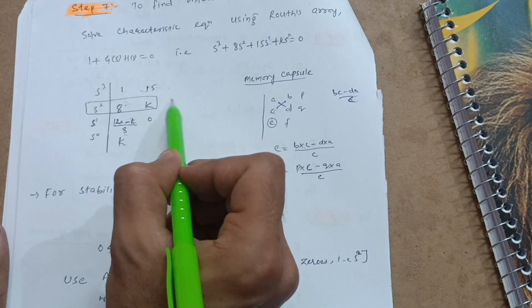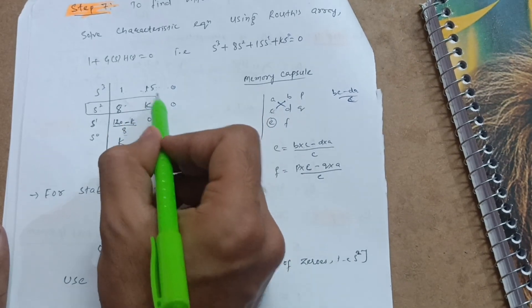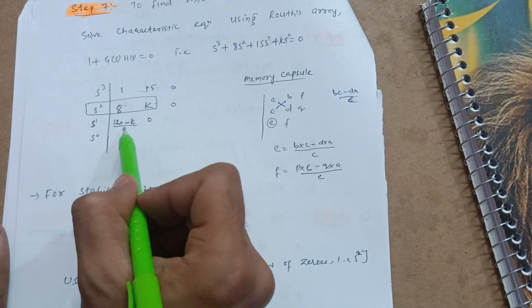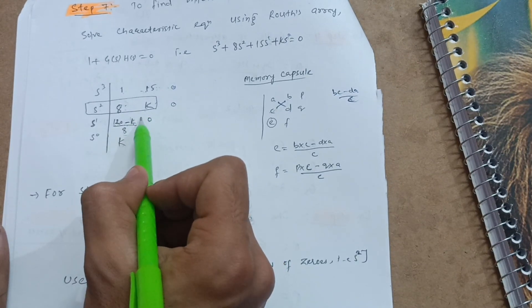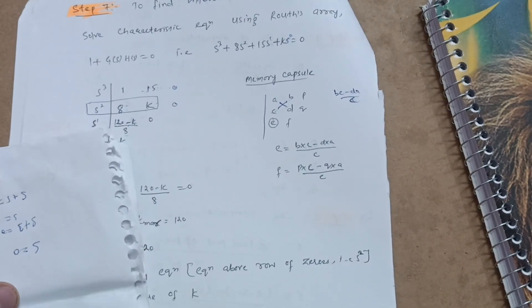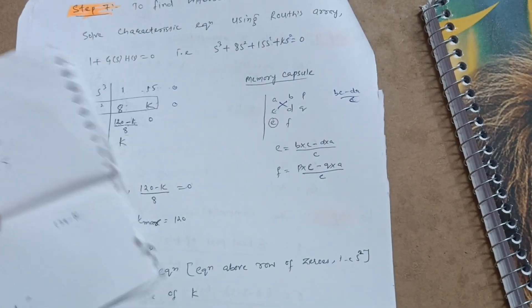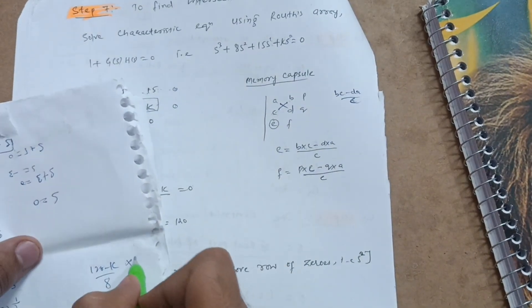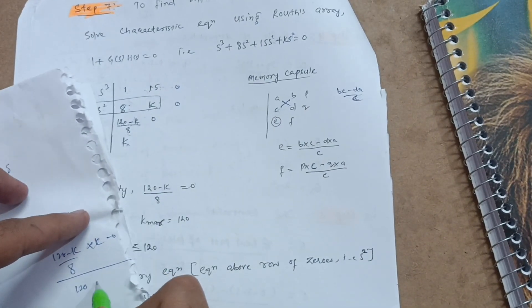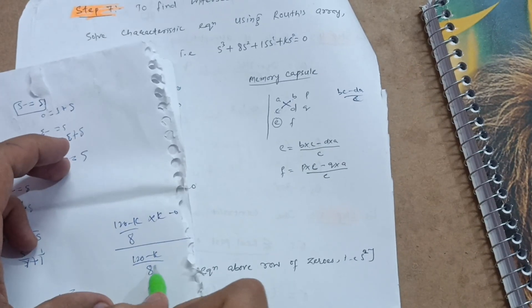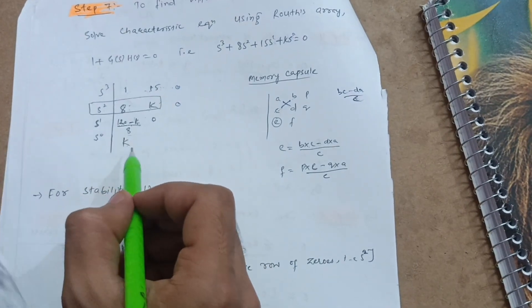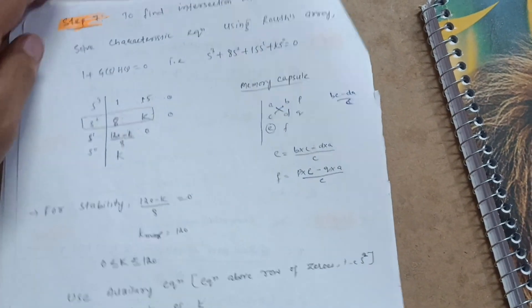For the next row, you multiply the corresponding terms: k × 0 = 0 and 15 × 0 = 0, so that term is 0. For the s⁰ row: you take (120 − k)/8 multiplied with k, then 8 × 0 = 0 minus 0, divided by (120 − k)/8. The (120 − k)/8 cancels, leaving just k. So I have written k here.